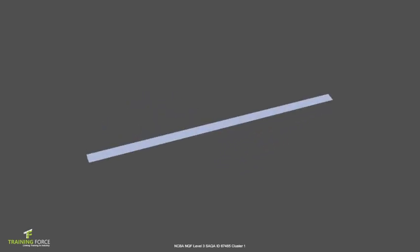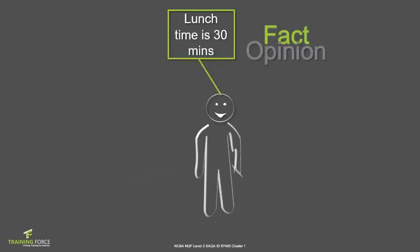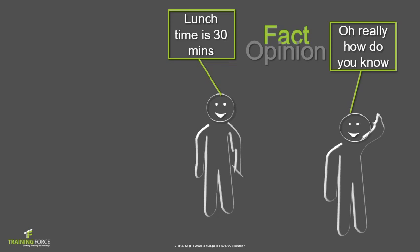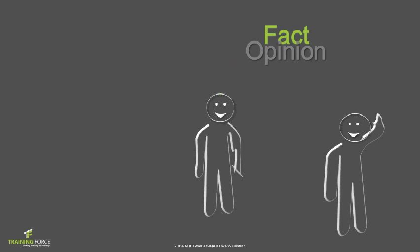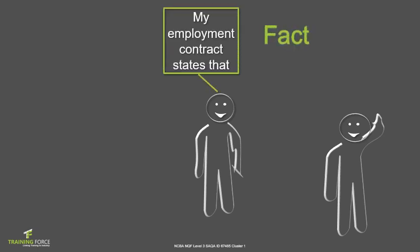The world is ending tomorrow. Is it fact or opinion? Tandeka makes a statement to SIPO. SIPO isn't sure whether what Tandeka says is true or false, so asks how she knows. Tandeka can back up her statement by referring to an employment contract that states lunches are 30 minutes long. A fact is therefore something that can be proven either true or false.